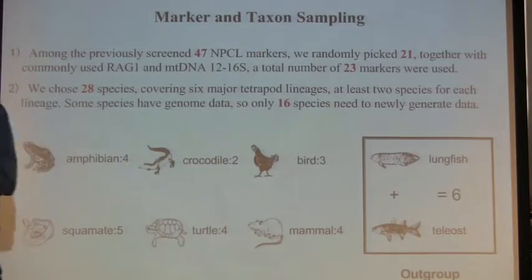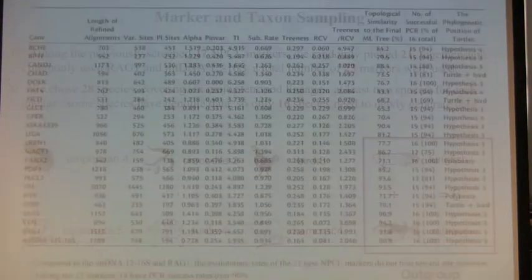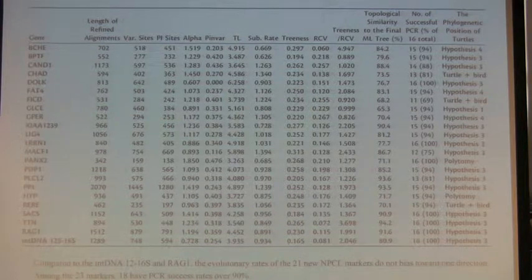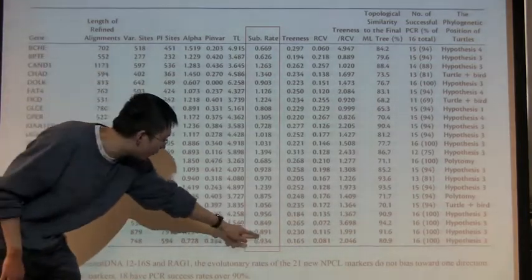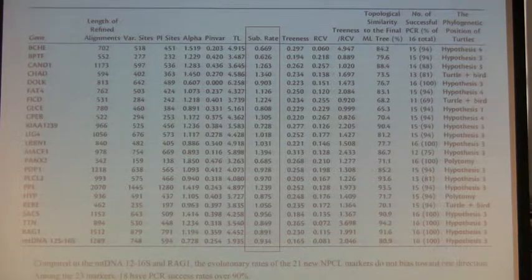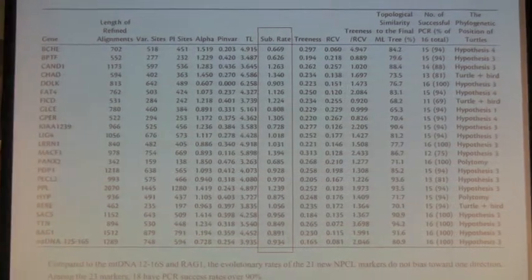Lungfish is very important, so we really wanted to generate lungfish sequences. This is what I got — 26 gene markers, new ones, plus RAG1 and mitochondrial DNA. You can see the evolutionary rates of these genes compared to RAG1 and mitochondrial DNA: many are higher and many are lower. It's not biased toward one direction — it's more even. Some genes can be used to resolve fast-evolving events, some for deeper events. The PCR success rate of these genes is also high — most over 90% — because we used multiple genome alignment.